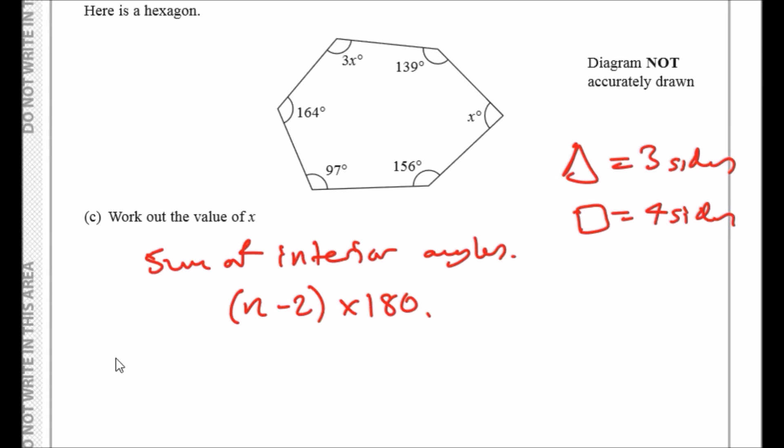Now for this one, let's work it out. We have six sides, so 6 take away 2 is 4, so 4 times 180 degrees. In your calculator or mentally you should get 720. So that means that the sum of everything here must be 720 degrees.